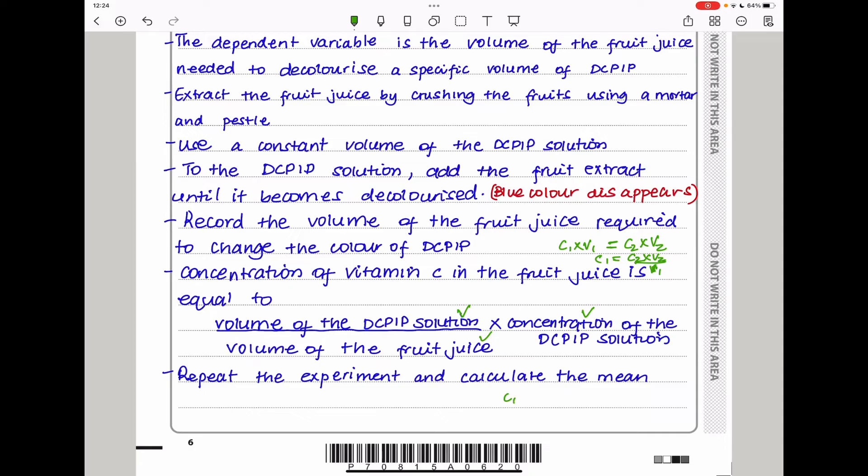If you're looking for concentration 2, it will be concentration 1 times volume 1 divided by volume 2. These two can give you the answer you're looking for. Repeat the experiment and calculate the mean. Remember you have to tell the examiner how to calculate this concentration of vitamin C in the fruit juice because that was your intention initially.